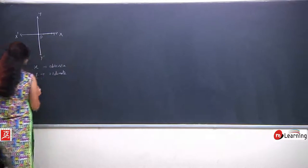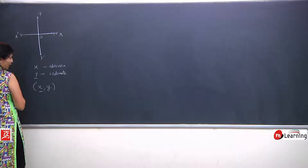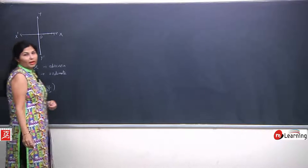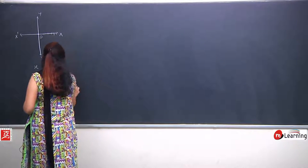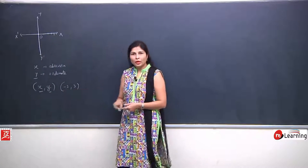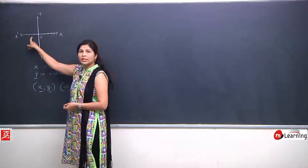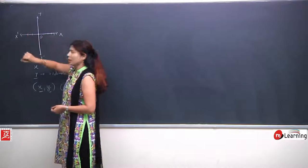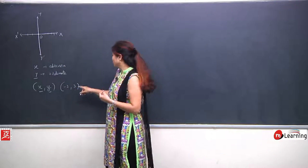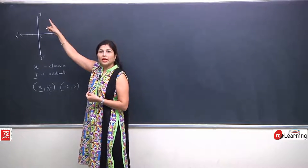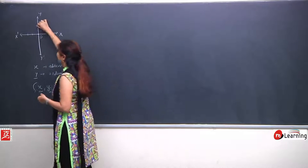Coordinate ko jab bhi hum ordered pair ke form mein likhenge, toh hum x, y likhenge — pehle humara x ka coordinate aayega, uske baad humara y ka coordinate. Like humne likha hai minus 2 and 3, toh yeh hume apne aap samajh mein aane lagega ki minus 2 means x ki value hai — positive direction mein nahi, negative direction mein. Aur 3 is positive, so it is upward direction, and it is in second place so yeh y ka coordinate hai.